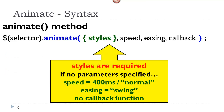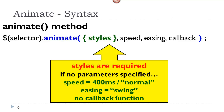The syntax for the animate method: the animate method is obviously tied into a selector. Inside the opening and closing parentheses of the animate method, we see the styles to be manipulated, which are a required parameter. We also have an optional speed, easing, and callback function. So not only do we animate these styles, we set the speed at which the animation occurs, the easing value, and a callback function to be executed after the animation finishes, should we wish to do so.